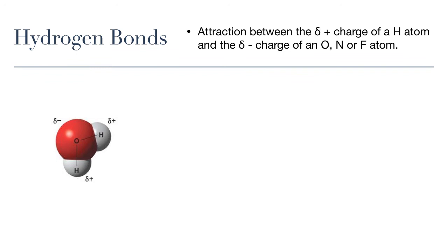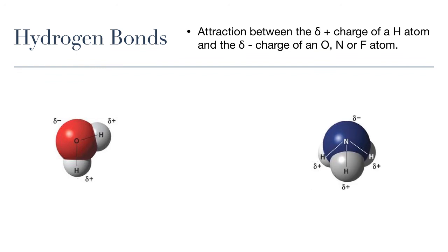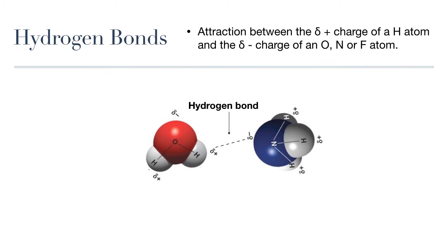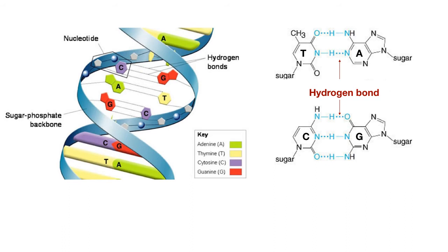Earlier we learned that when hydrogen forms covalent bonds with oxygen, it ends up with a slight positive charge, and the oxygen ends up with a slight negative charge. The same is true when hydrogen forms covalent bonds with other highly electronegative elements like nitrogen or fluorine. So if you have two polar molecules that are polar because of unequal sharing between hydrogen and nitrogen, oxygen, or fluorine, the positive charges in the hydrogen of one molecule can attract the negative charges in the nitrogen, oxygen, or fluorine of another molecule. This attraction is called a hydrogen bond. For example, the double helix of DNA is held together by hydrogen bonds forming between the nitrogenous bases within the two strands of DNA.